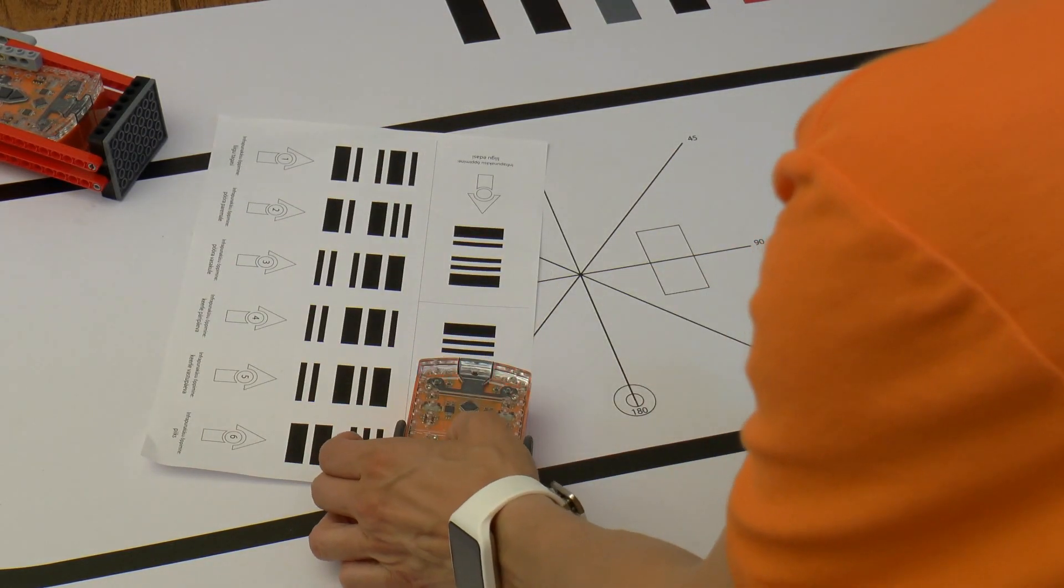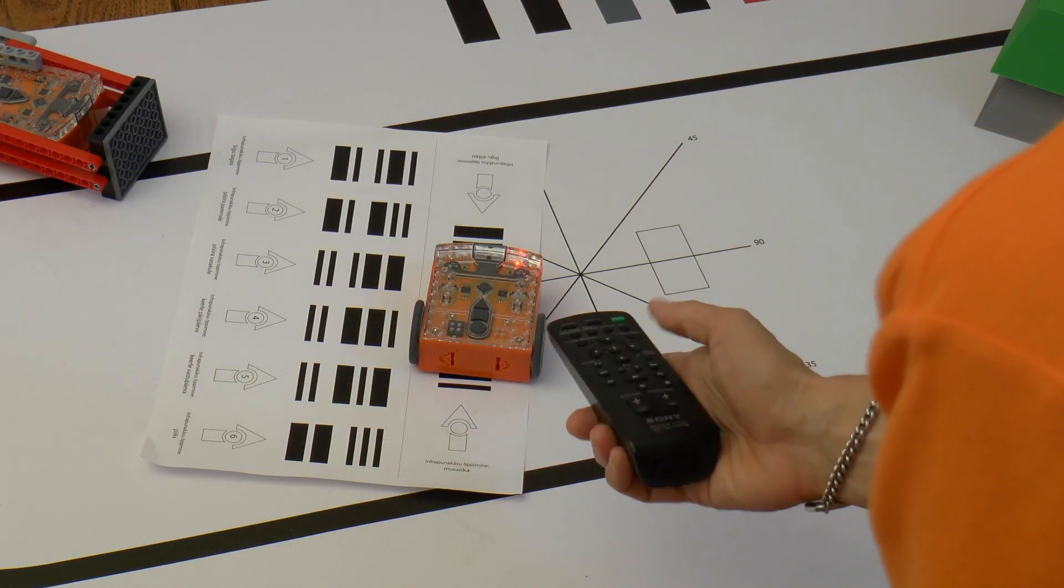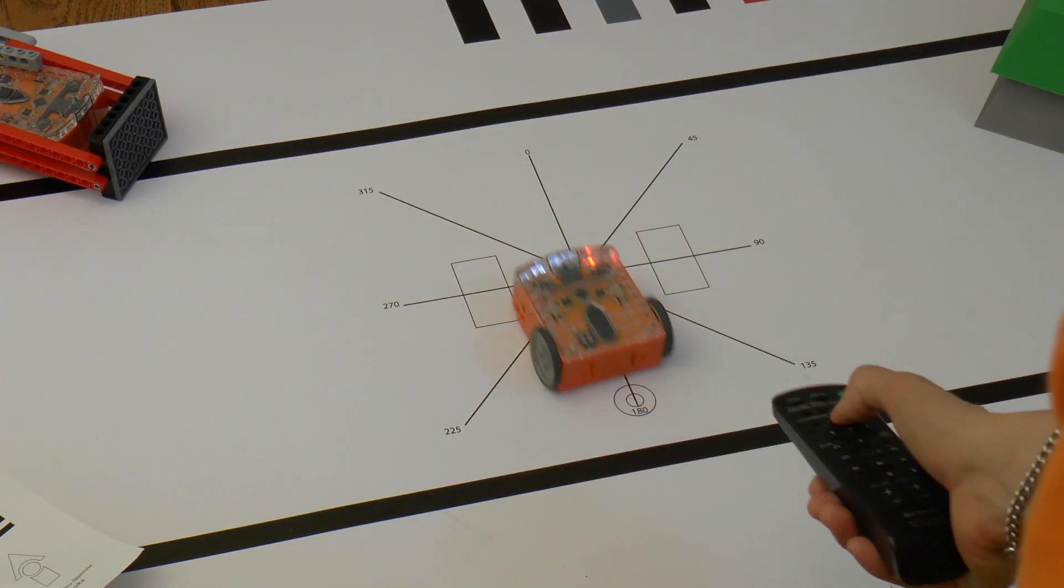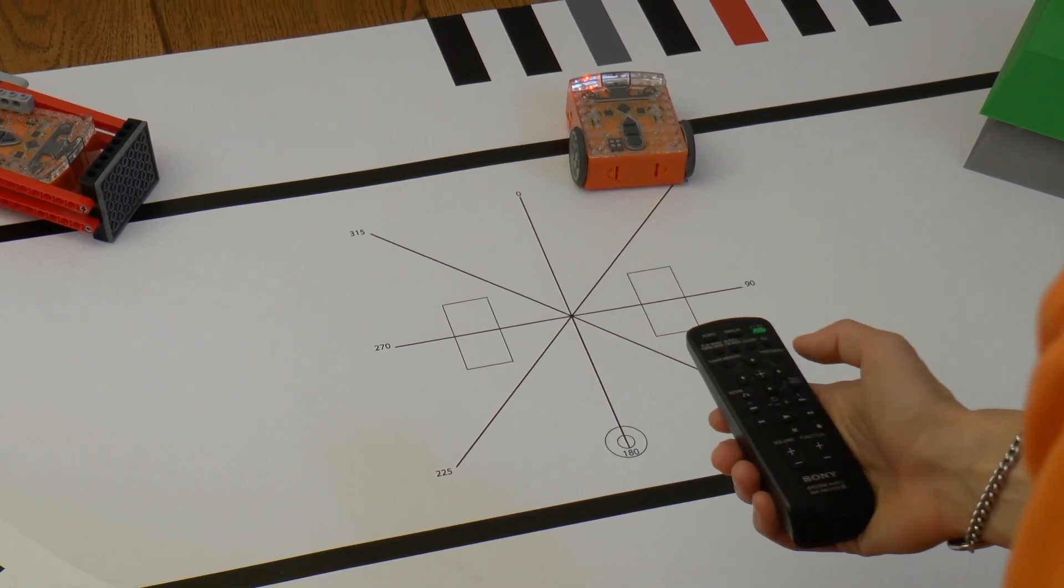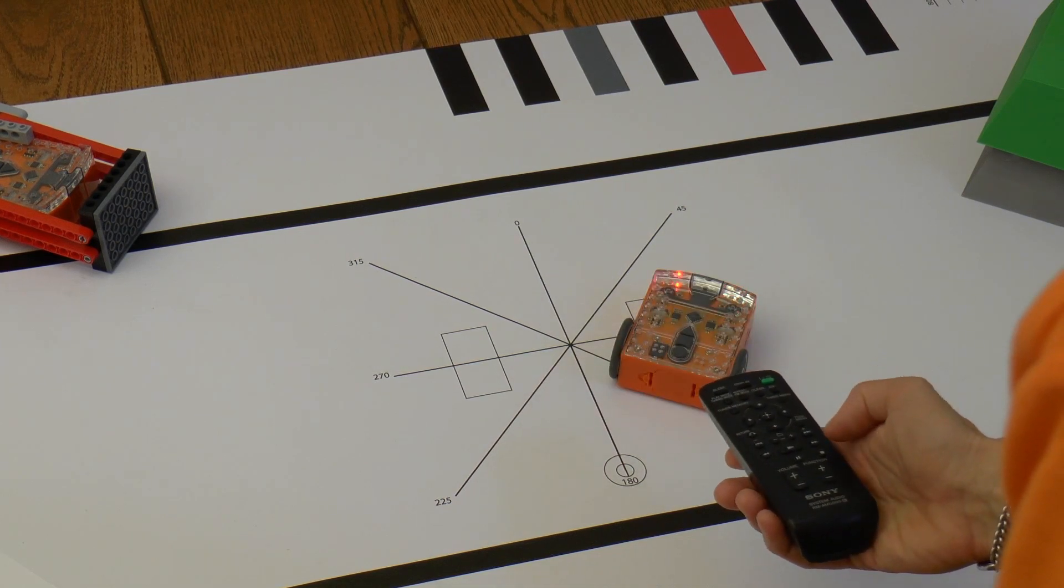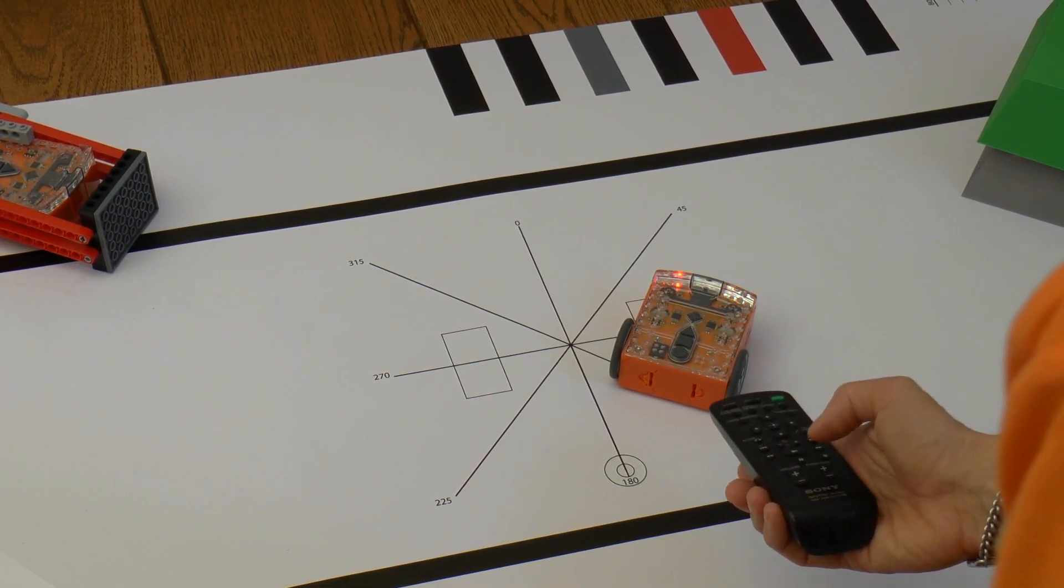And that's one Edison tuned and we can now start playing. If you have multiple Edisons, then they all can receive the remote commands. Here you have two options: either tune the other Edisons the same way or assign them different actions.